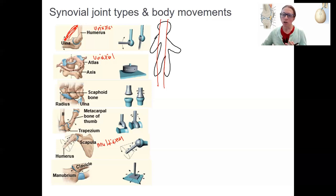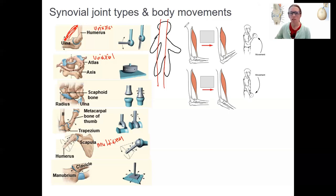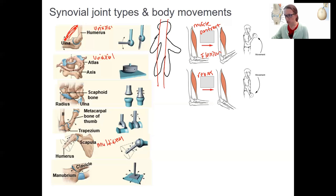Where the muscles are, along with the function of the joint, determines body movement. Here's a simple example with the arm: the muscle is placed across the joint. When that muscle contracts, you get a curling of the arm — that's flexion. When the muscle relaxes, it lengthens and the arm moves back down — that's extension, in the sagittal plane. This is a preview of how muscles relate to joint movement.